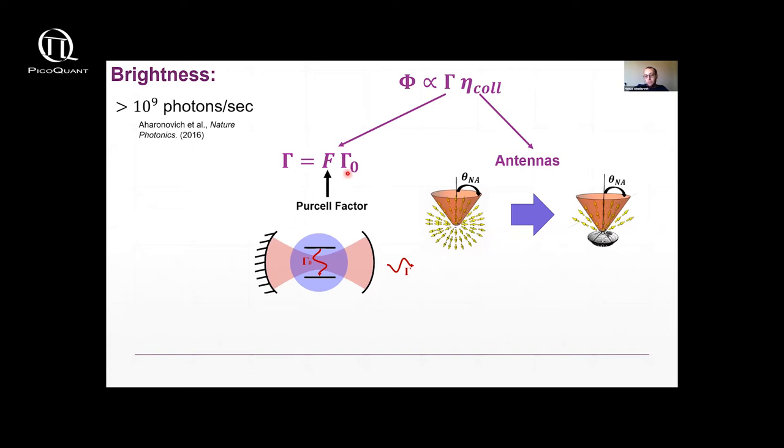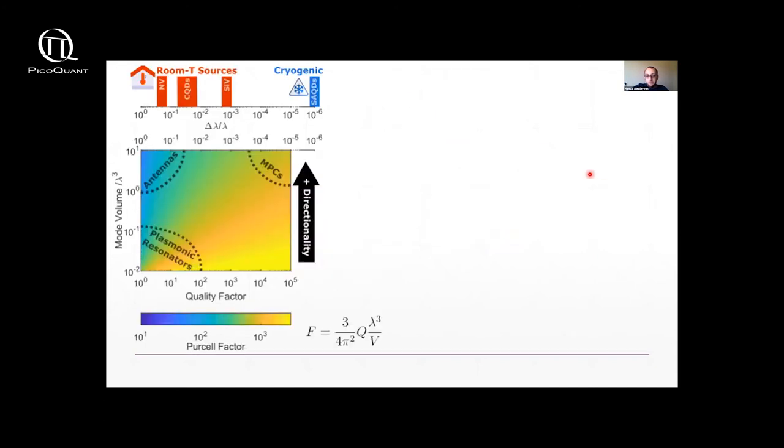Now the issue at room temperature is that you cannot achieve both of these improvements in one structure. What I show you here is the Purcell factor as a function of the quality factor of your structure and as a function of the mode volume. The Purcell factor is directly proportional to the quality factor, inversely proportional to the mode volume. This is the standard textbook formula for the Purcell factor.